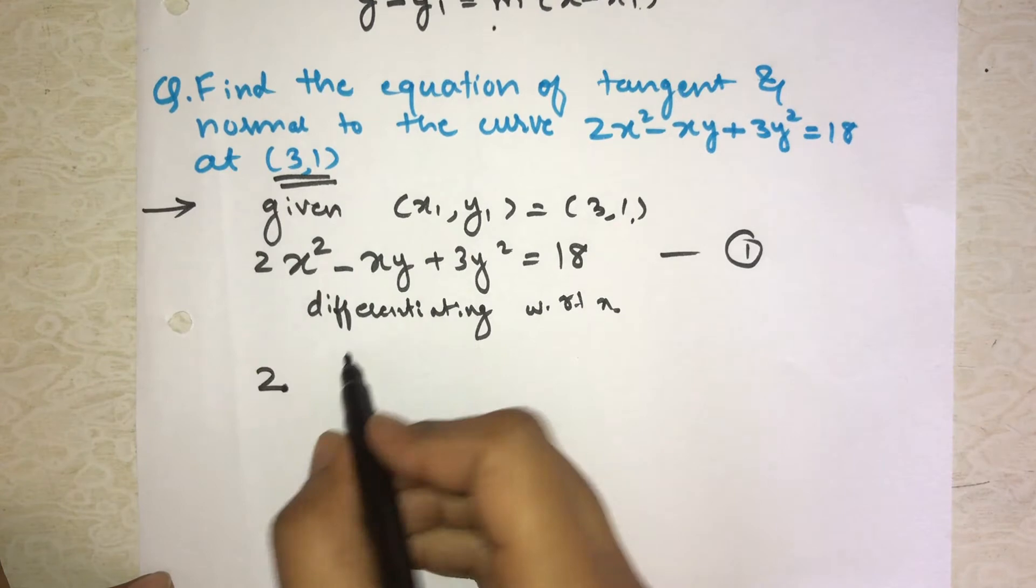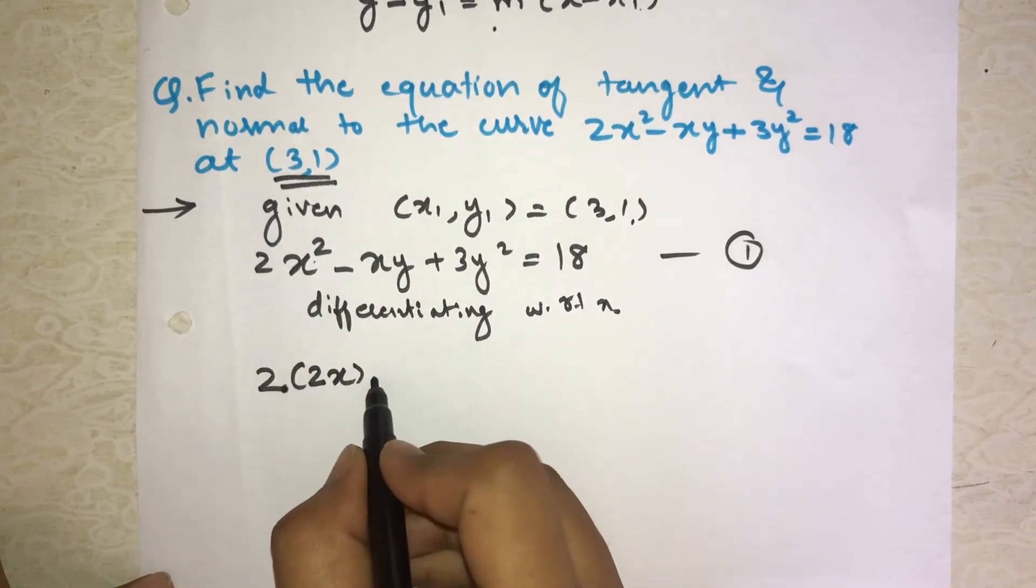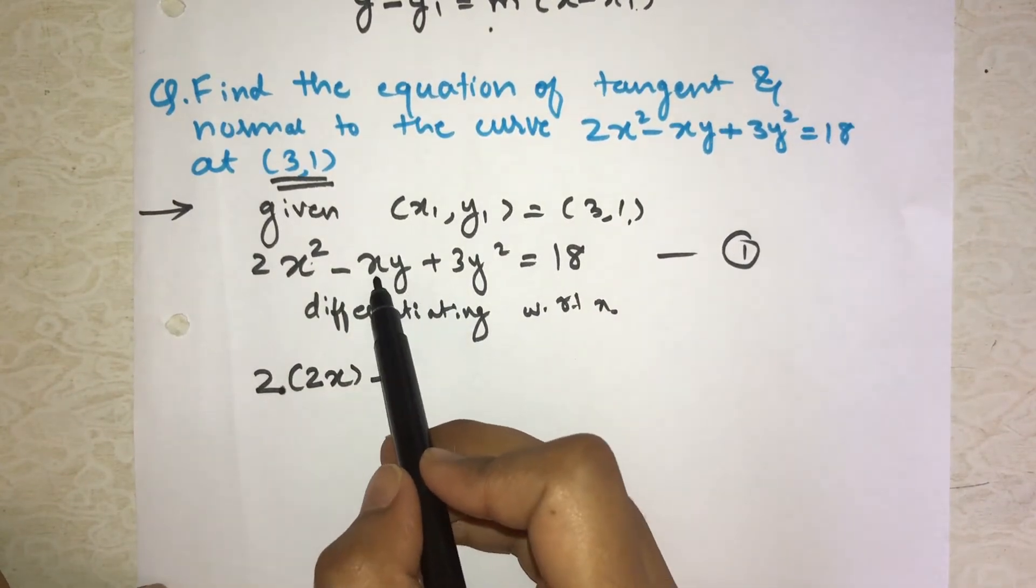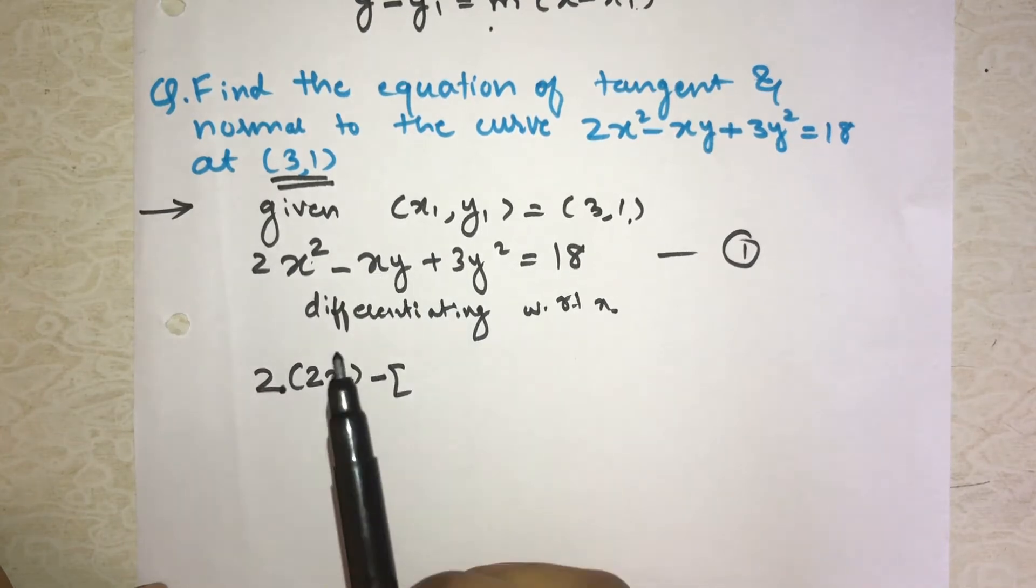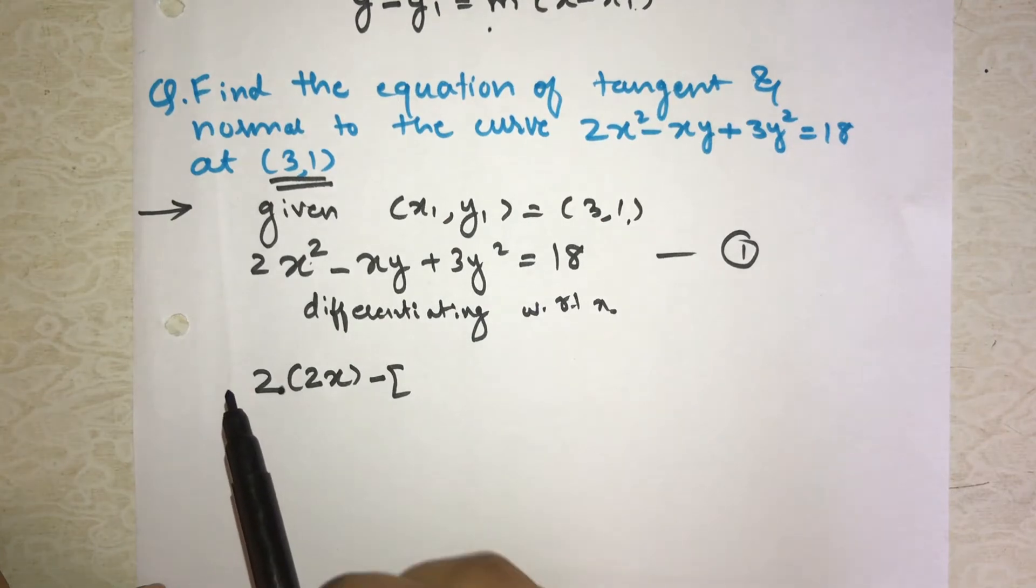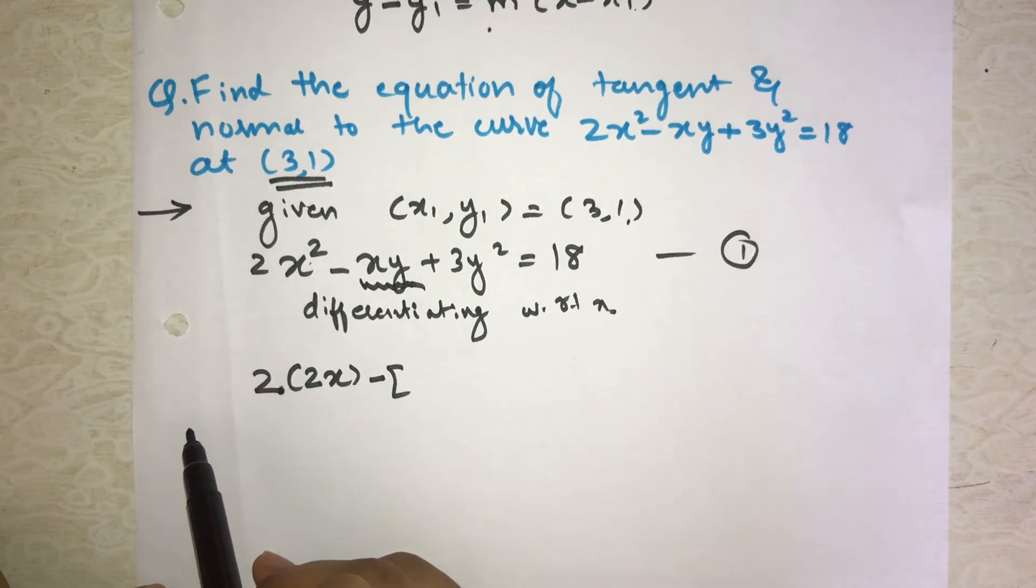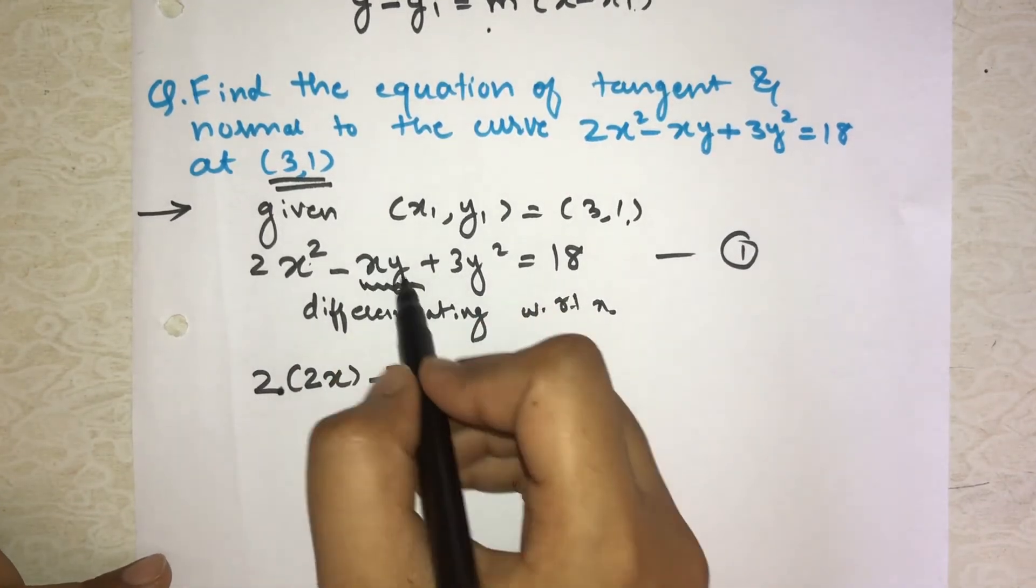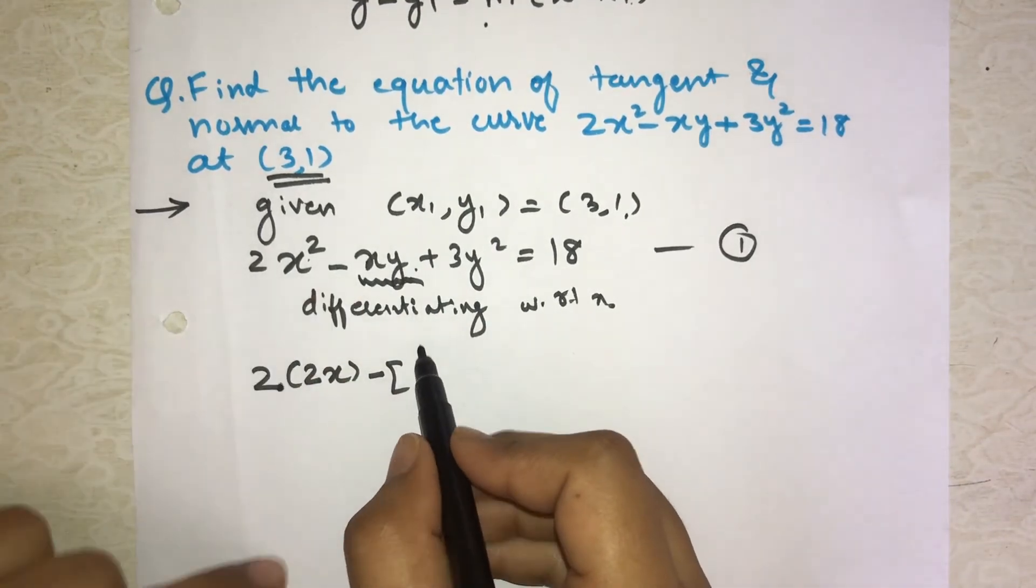Then 2x, what is the differentiation of 2x²? This 2 will be as it is, as it's the constant before the variable. Then derivative of x² is 2x. Then minus. Now see, here there are 2 variables, 2 functions: x and y. These are 2 different variables, so these are 2 different functions. Between them there is multiplication.